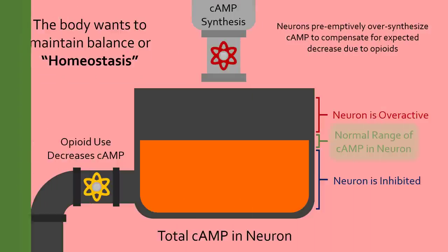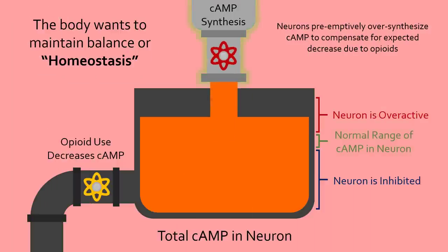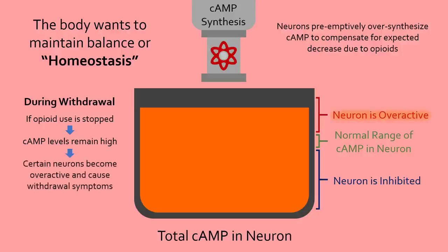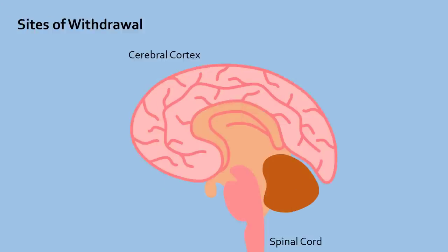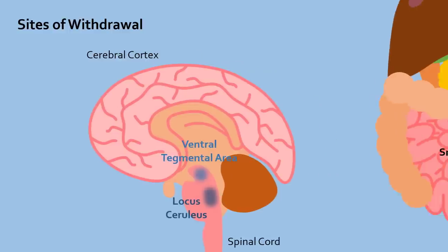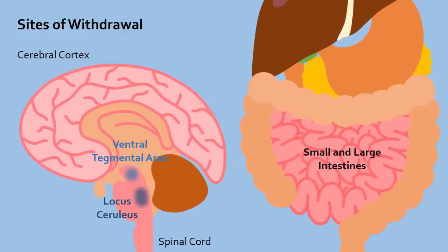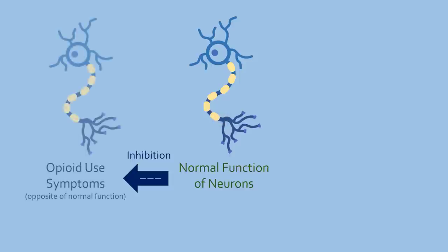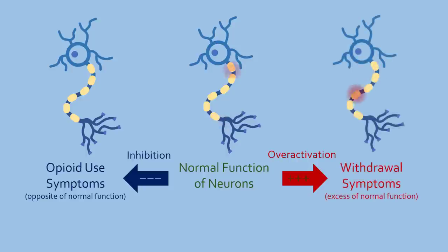Withdrawal symptoms are also related to the compensatory increase in cAMP. If a patient with opioid use disorder stops using opioids, the compensatory increase in cAMP is not cancelled out by opioid use, so certain neurons become overactive to cause withdrawal symptoms. Opioid withdrawal symptoms can be attributed to overactive neurons in three areas: the ventral tegmental area, the locus coeruleus, and the gut. As we go through these areas, you will notice a common theme — opioid use results in symptoms opposite to the normal function of these neurons due to neuron inhibition, while withdrawal results in symptoms that are more extreme versions of the normal function due to neuron overactivation.